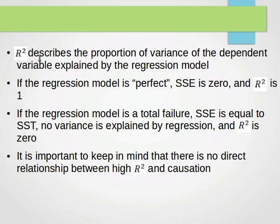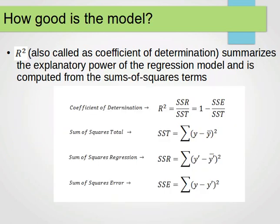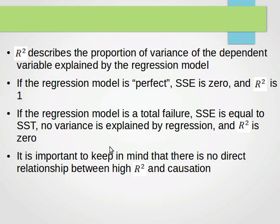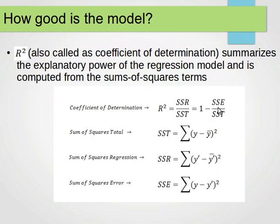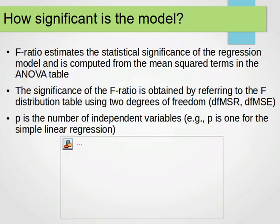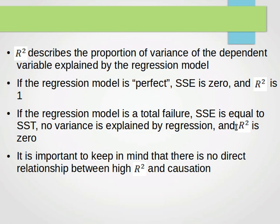R-squared describes the proportion of variance in the dependent variable explained by the regression model. If the model is perfect, SSE is zero and R-squared equals one — there is no error. If the model is a total failure, SSE equals SST and R-squared equals zero. It's important to keep in mind that there is no direct relationship between a high R-squared and causation.